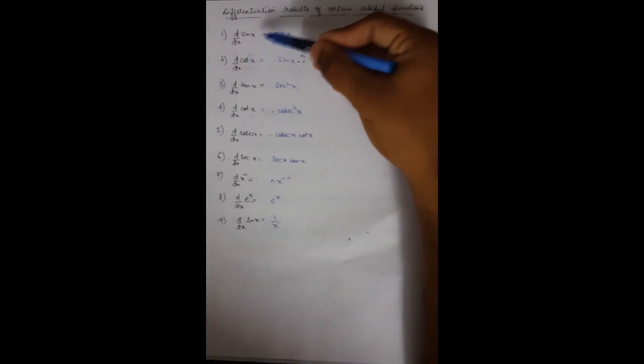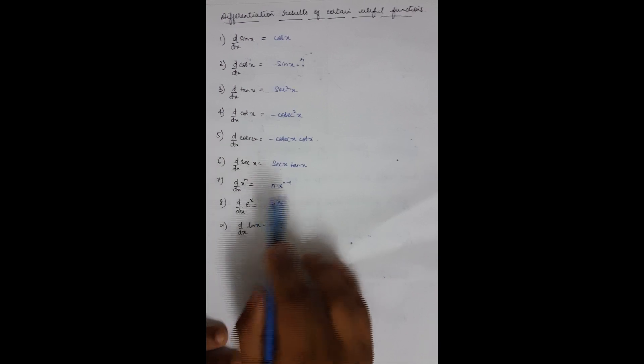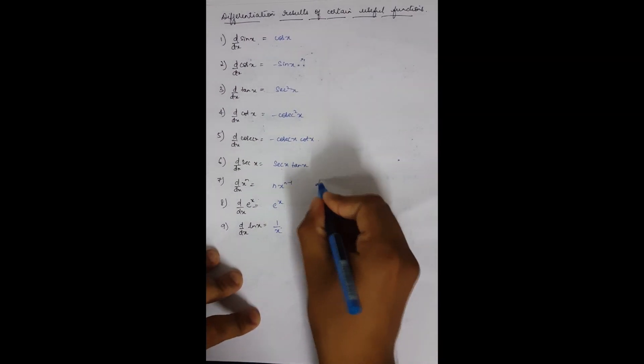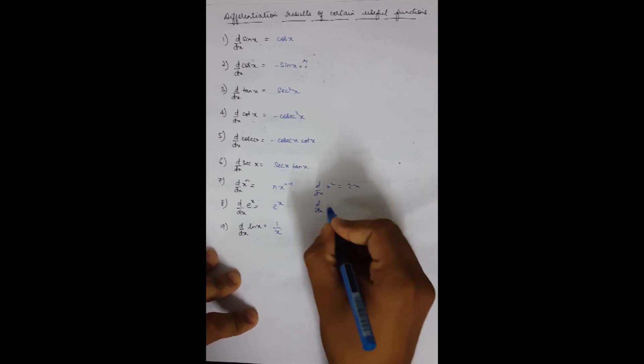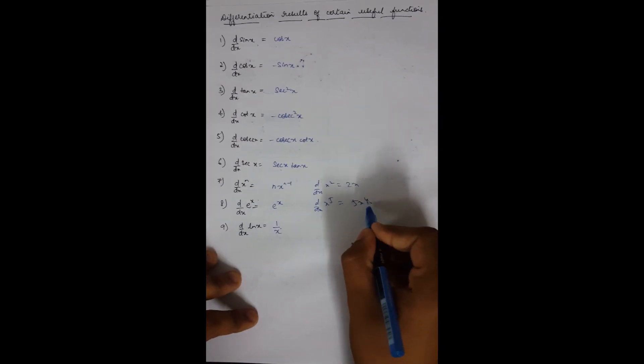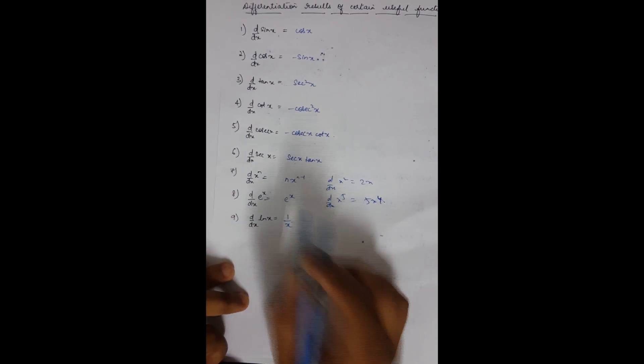Using limits you can find derivatives of many functions. Here are some key results: d/dx of sin(x) is cos(x); d/dx of cos(x) is minus sin(x); d/dx of tan(x) is sec squared(x); d/dx of cot(x) is minus cosec squared(x); d/dx of x to the power n is n times x to the power (n minus 1) — so d/dx of x squared is 2x, and d/dx of x to the 5 is 5x to the 4. Also, d/dx of e to the x is e to the x itself (it doesn't change), and d/dx of ln(x) is 1/x.